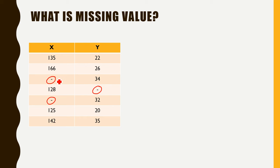A missing value is simply denoted by the symbol NA, which stands for not available or not applicable.